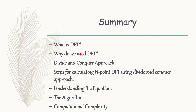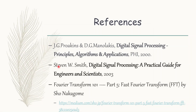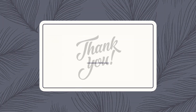Let's summarize what we have discussed in this video. We saw what DFT is and why we need it, then dived into the divide and conquer approach. We covered the steps for calculating an N-point DFT using divide and conquer, understood the equation, the algorithm, and finally found the computational complexity — comparing it with the general method. The references followed are two books: one by John G. Proakis and D.G. Manolakis on signal processing principles, algorithms and applications, and another by Steven Smith on signal processing — a practical guide for engineers and scientists. An article by Shorna Kagom is also referenced; the link will be in the description. If you have any queries, feel free to post them in the comments. Thank you.